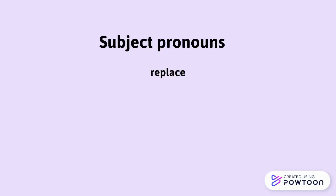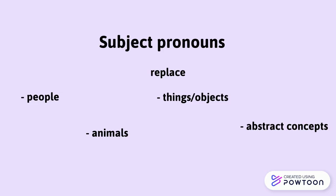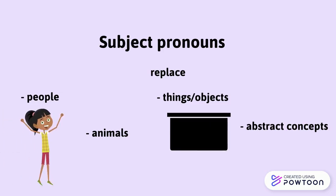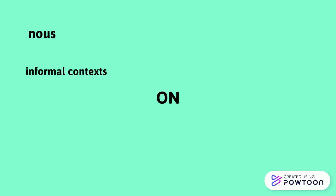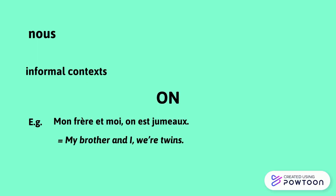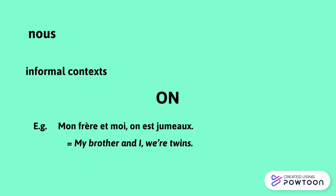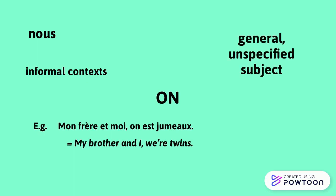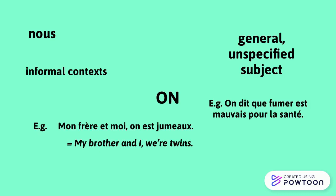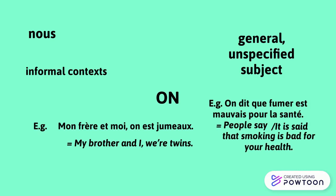The pronouns replace people, animals, things, objects, or abstract concepts. For instance, la fille, la table, la philosophie — all these words can be replaced by elle. On can mean nous in an informal context; for instance, Mon frère et moi, on est jumeaux — my brother and I, we are twins. In other contexts, on expresses a general, unspecified subject: On dit que fumer est mauvais pour la santé — people say, or it is said, that smoking is bad for your health.